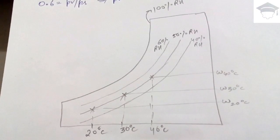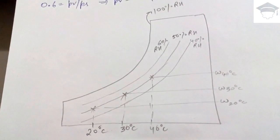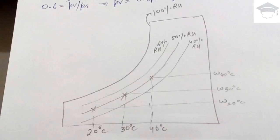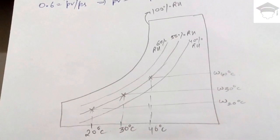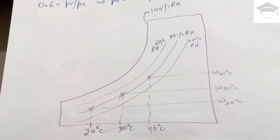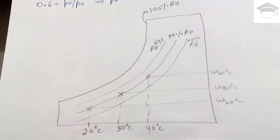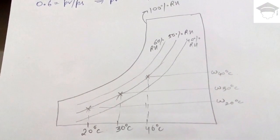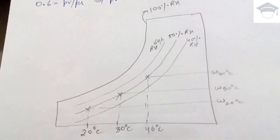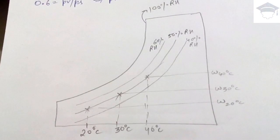Similarly, you can draw the 60% RH, 40% RH, and 30% RH lines by finding the corresponding points and joining them with a smooth curve.